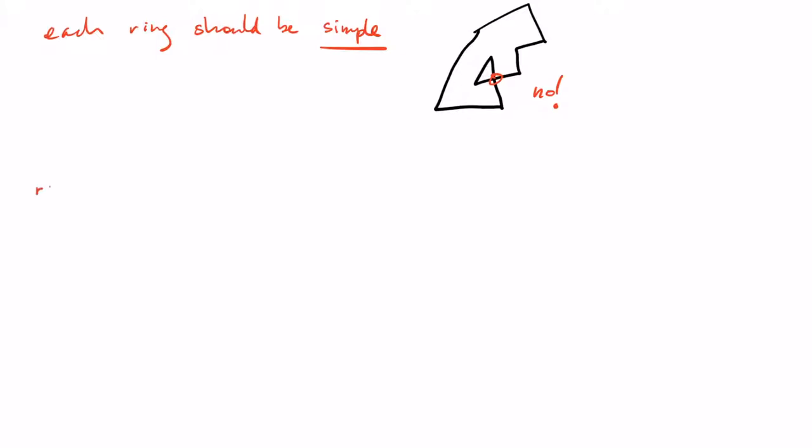Basically, two rings that can be the outer and the inner rings can touch, but only at vertices. They're not allowed to touch along edges. And they're also not allowed to overlap.